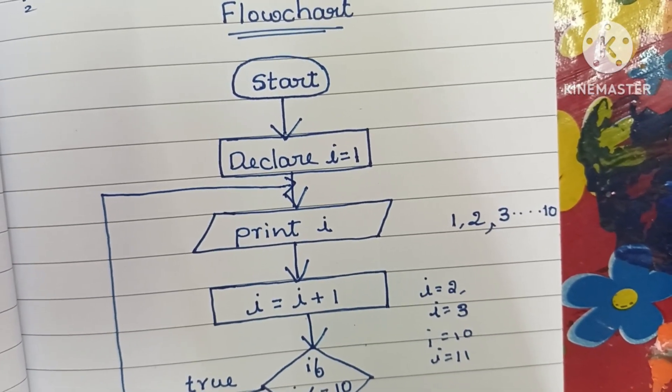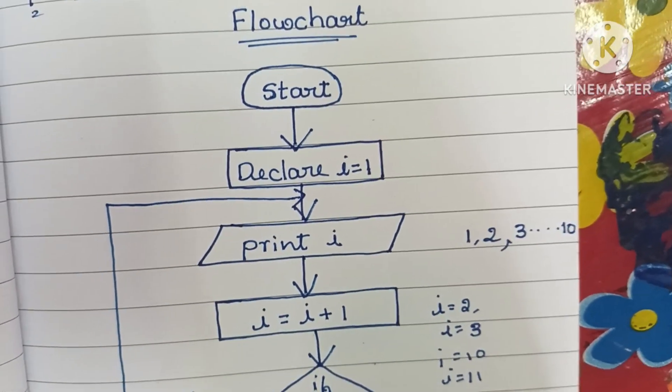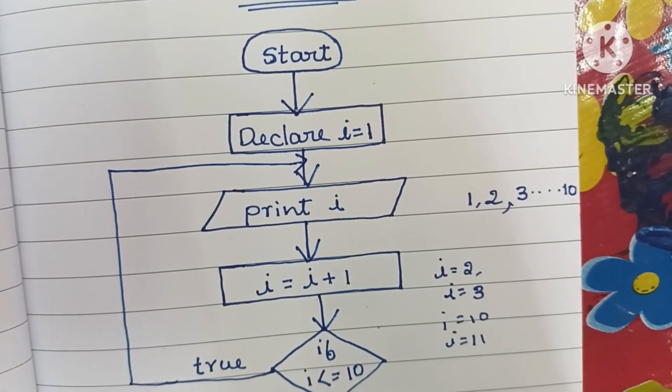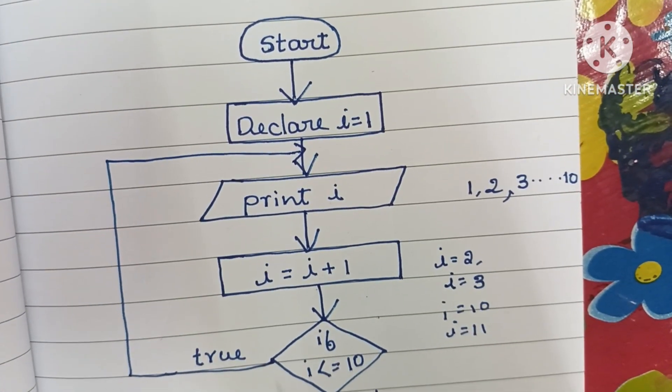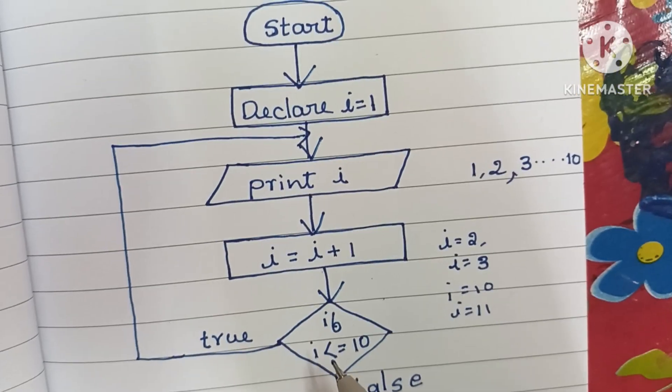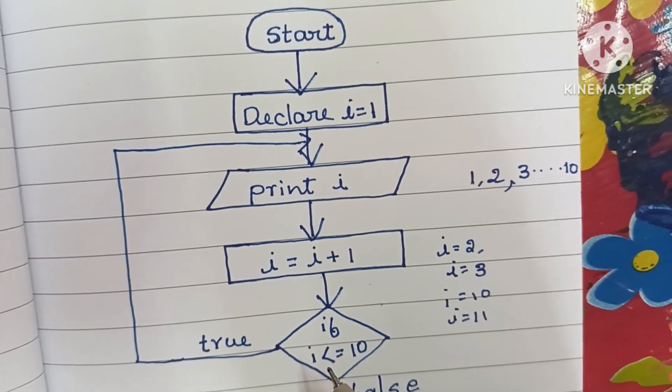So this is the flowchart to print numbers from 1 to 10. If you like my video, please like and subscribe to my channel. Thank you for watching.